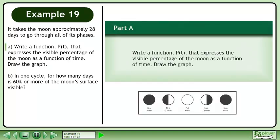It takes the moon approximately 28 days to go through all of its phases. In Part A, write a function p that expresses the visible percentage of the moon as a function of time. Draw the graph.